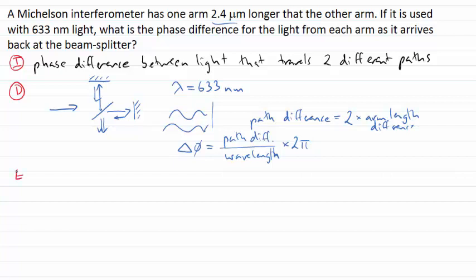Now we should be able to evaluate for this particular problem. This should be a fairly straightforward calculation. Now change in phase here, the phase difference will be two times the arm length difference, in that case two times 2.4 microns we're told here.